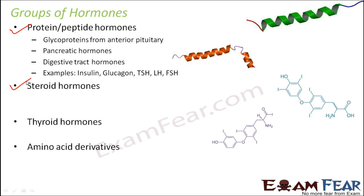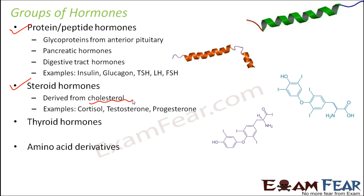Steroid hormones are those derived from cholesterol, which falls under the category of fats. Examples of steroid hormones include cortisol, which is a corticoid, testosterone, and progesterone — the male and female hormones secreted by the testes and ovaries respectively.